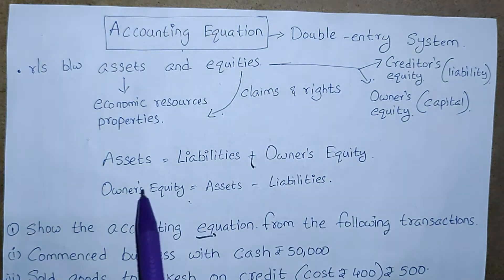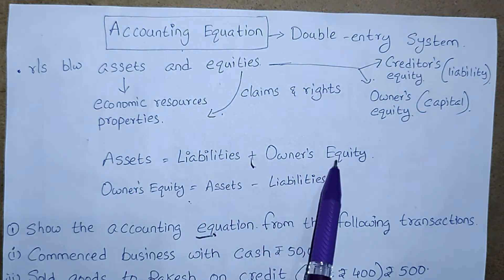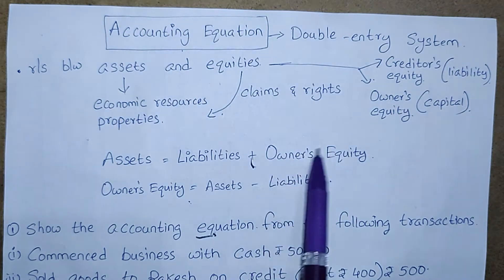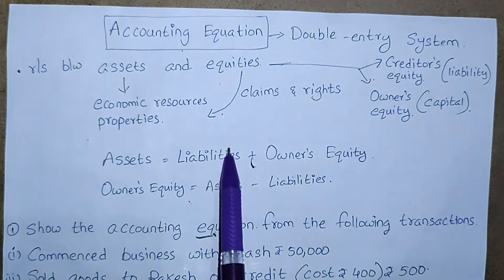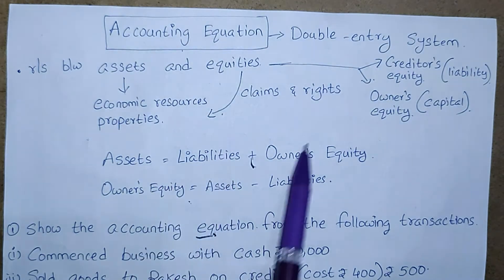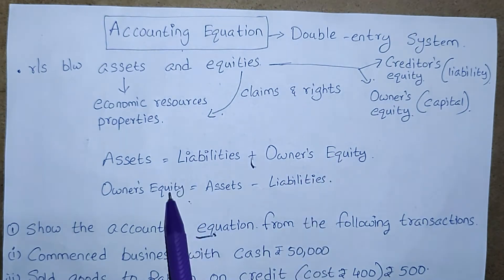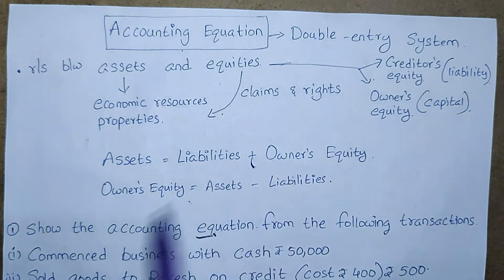The accounting equation is: Assets = Liabilities + Owner's Equity. Owner's equity means capital. Liability means creditor's equity. If you want to calculate owner's equity: Owner's Equity = Assets minus Liabilities. I think all of you understood this accounting equation.